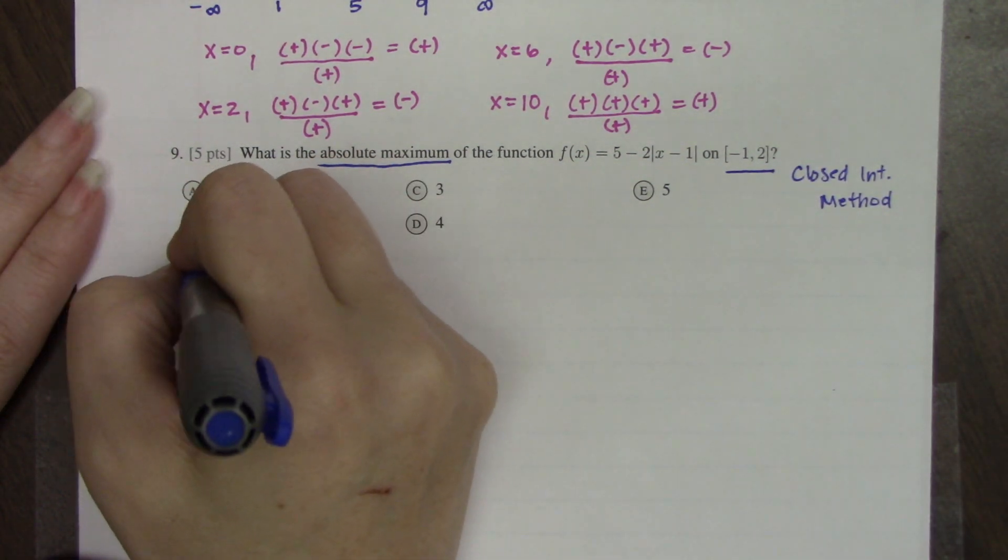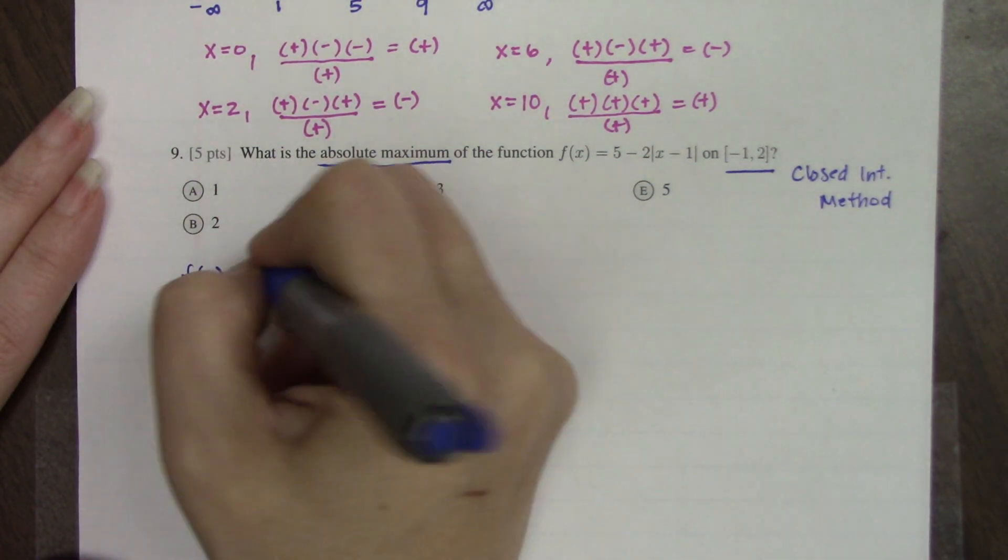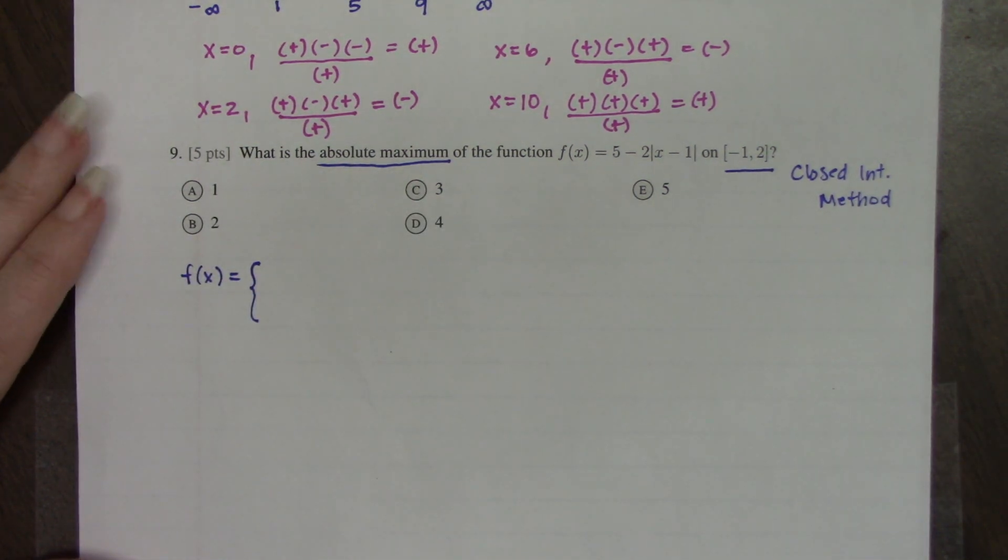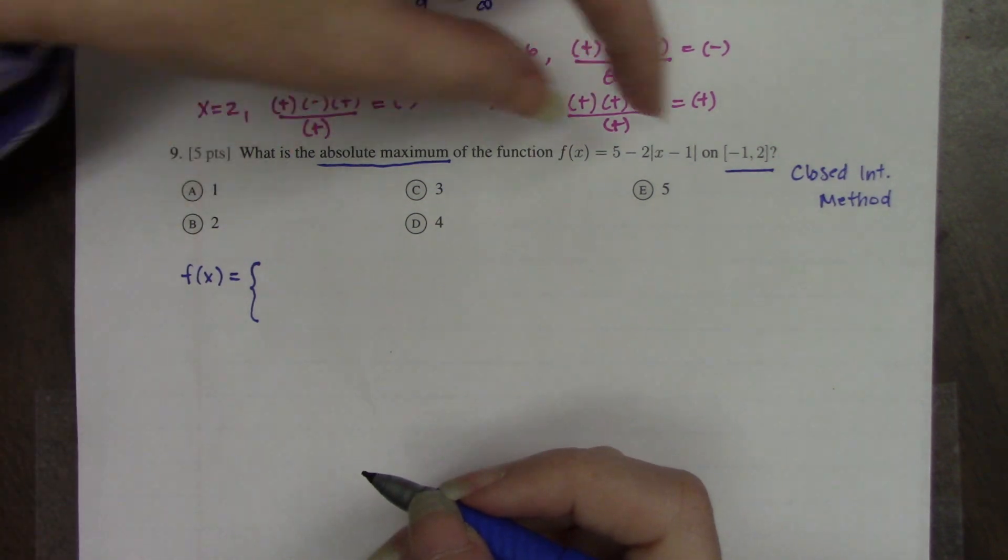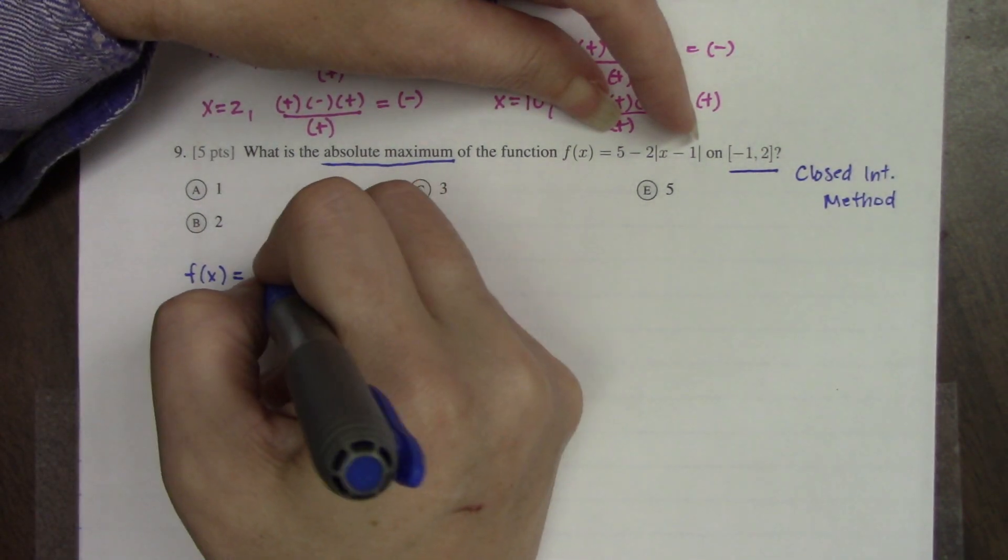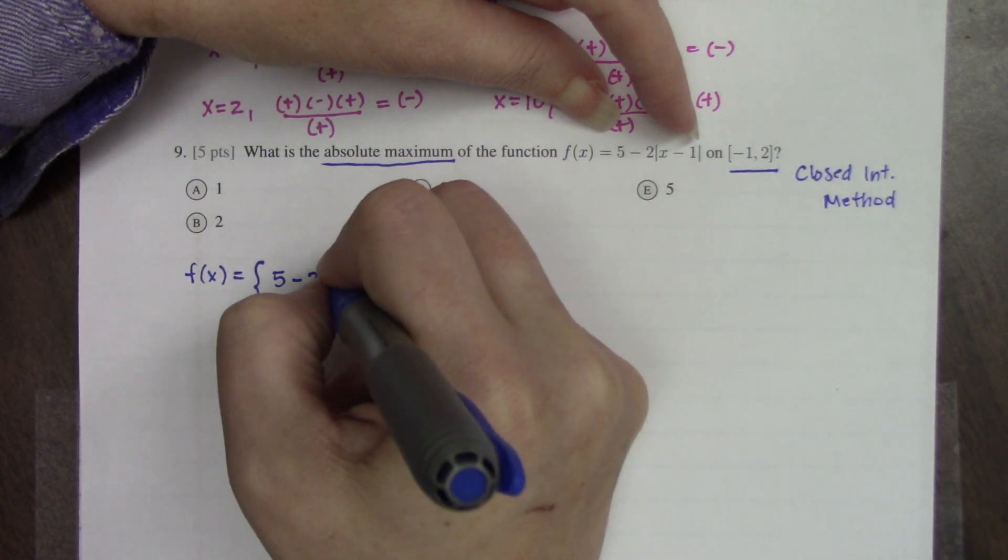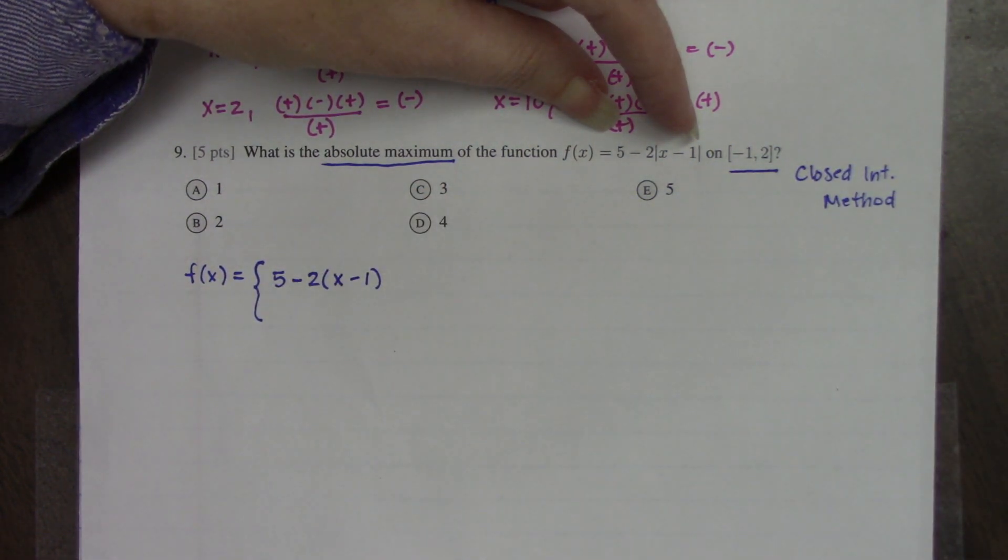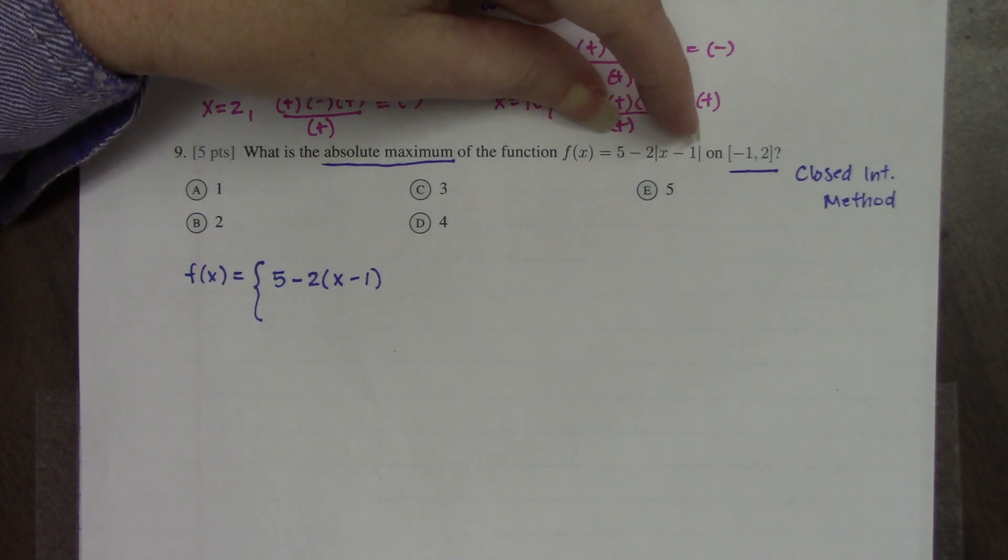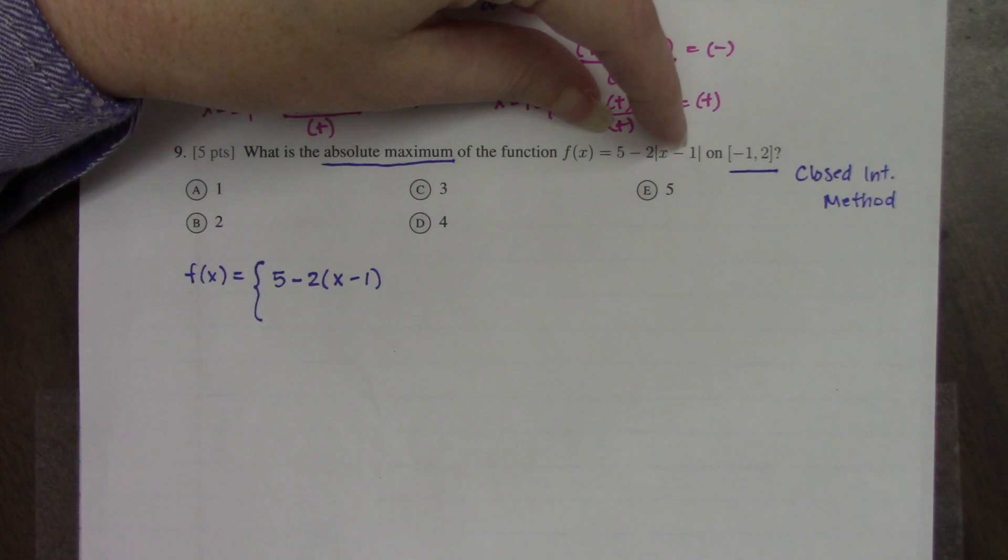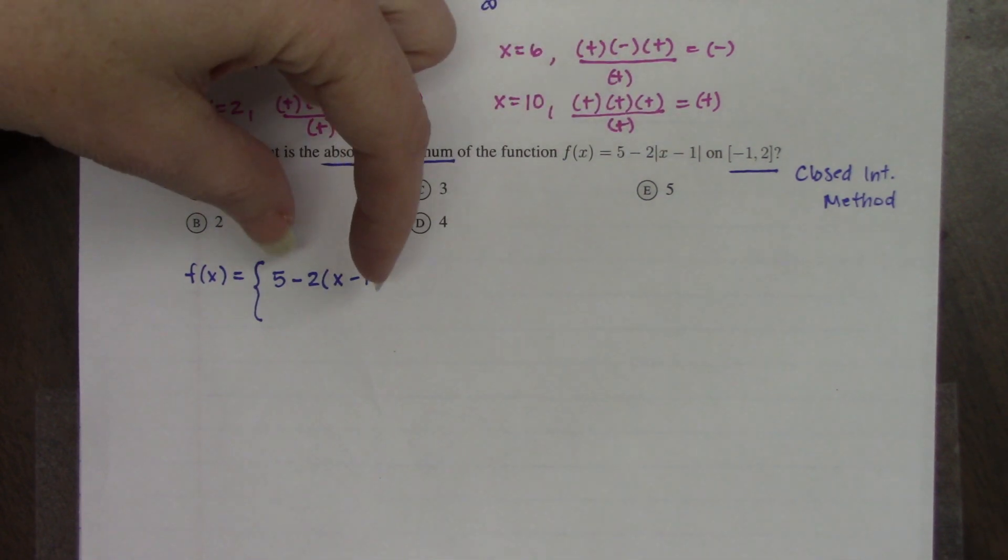So I'm going to take the function f(x) and we're going to break up the absolute value in the same way we did for absolute value of x on an earlier problem. The first thing that we do is we take the function and we write it exactly the way it is, and I'm replacing the absolute value bars with parentheses. This represents the parts of the function where this quantity was already going to be positive, so it comes out exactly the same as if the absolute value bars weren't there.